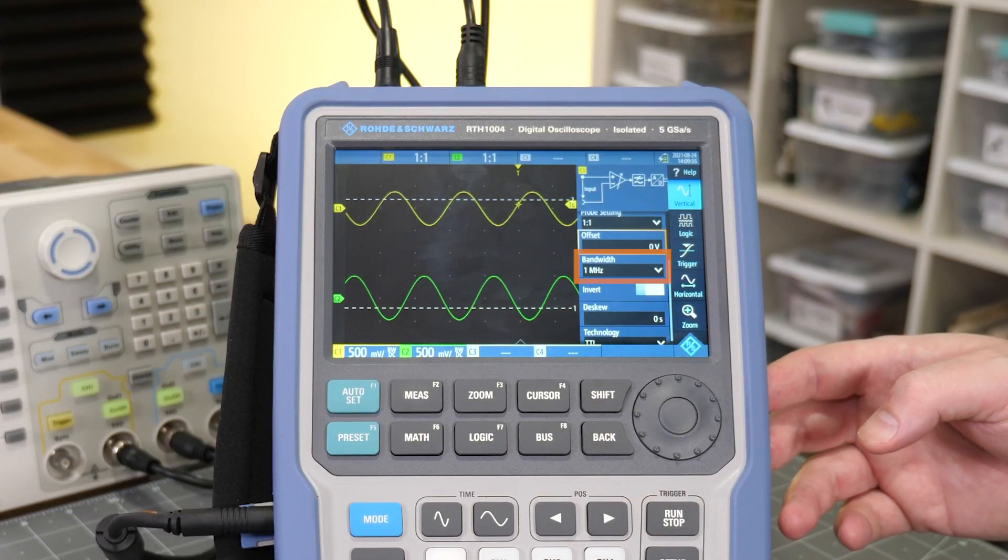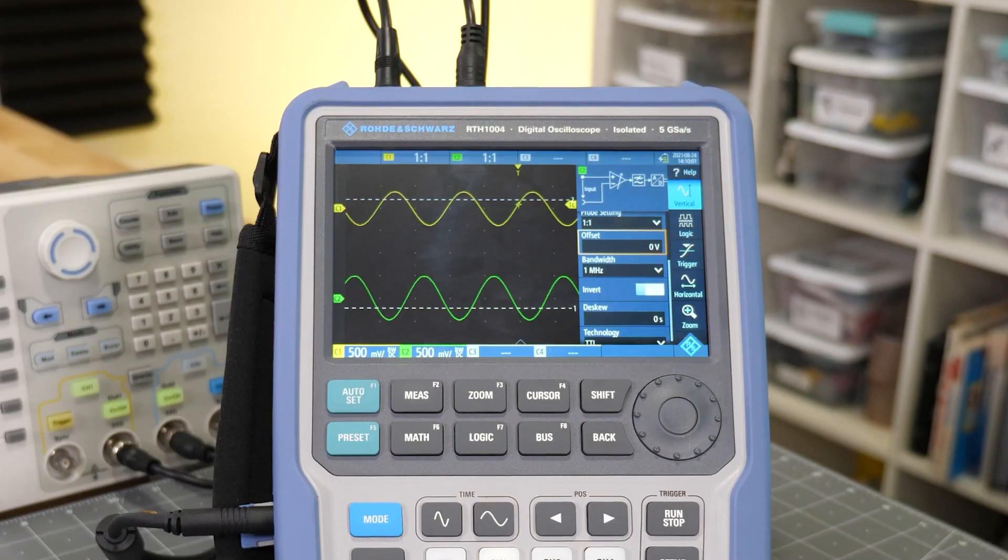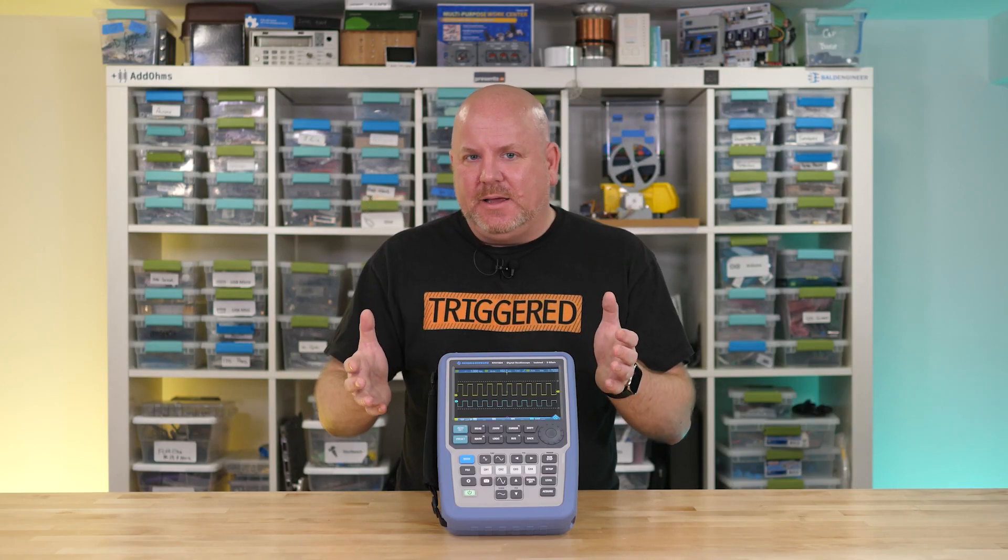On the RTH oscilloscope, both channels have their bandwidth limited to 1 MHz. The green channel is supposed to be a square wave, but it doesn't look very square now, does it? There's also another issue, but we're going to come back to that in a minute. Why do those both look like sine waves?